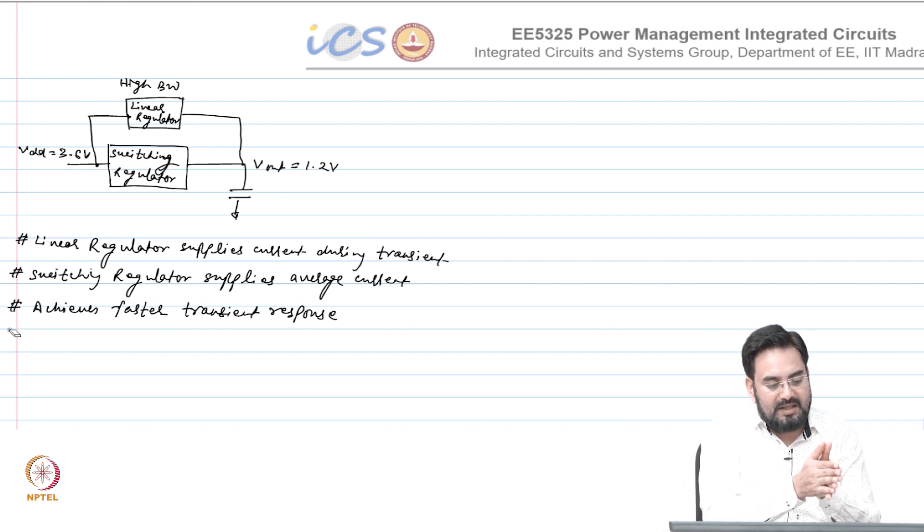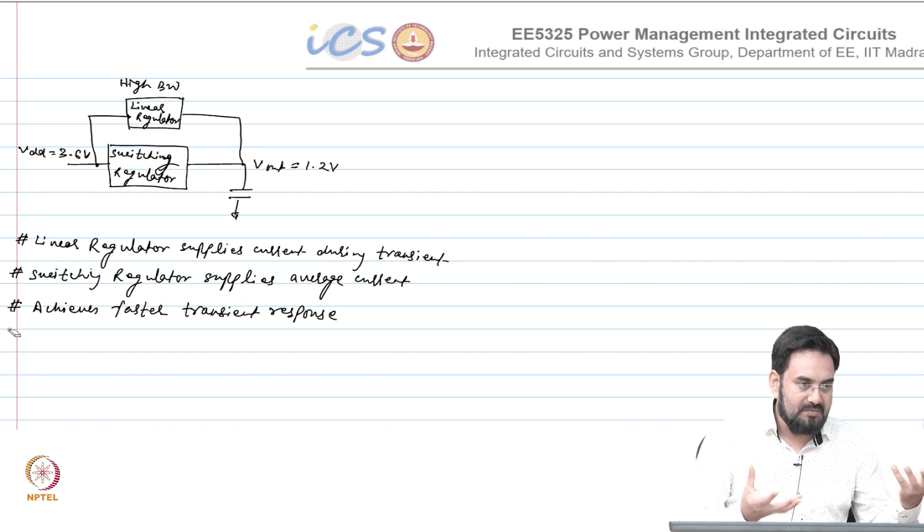If you have to cater all, total 2 amp current from switching regulator, you have to design it for 2 amp which means you have to use bigger FETs and all those, which means you may incur more switching losses also because gate driver gate cap size will be larger. You design your switching regulator for 1 amp average and 1 amp transient will be supplied by your linear regulator. Since this transient is coming only once in a while, you would not lose that much efficiency. Most of the time it will be supplying 1 amp average current and the 2 amp peak will happen only once in a while.